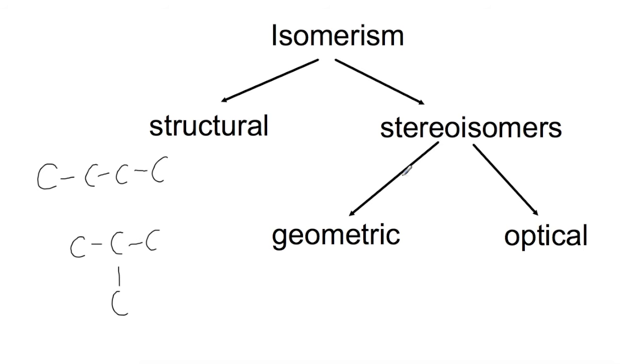Stereo isomers have all of their atoms joined in the same order. Geometric isomers have a structural element which hinders rotation, and optical isomers have mirror images. There are two ways to have geometric isomers: one way is to have a double bond within the molecule, another way is to have a ring. Both of these will stop rotation within the molecule.